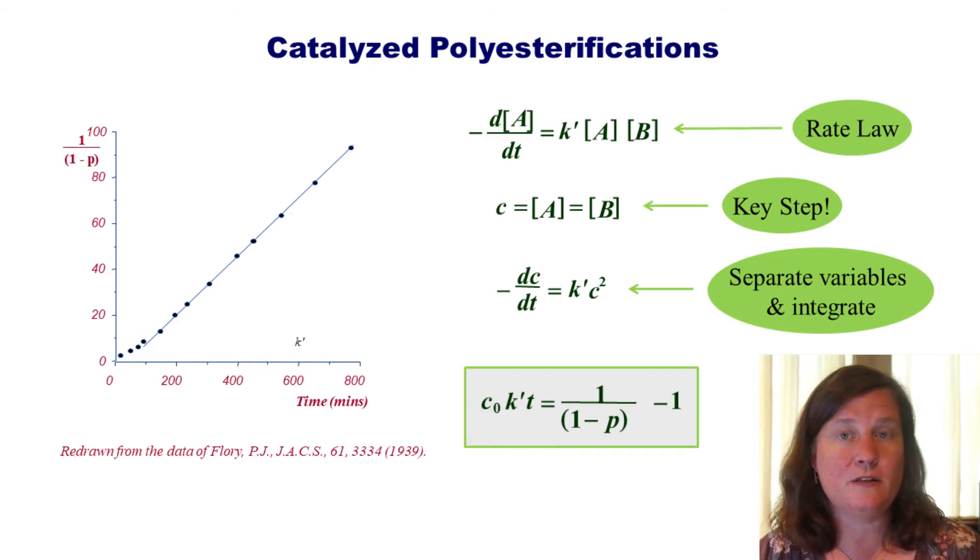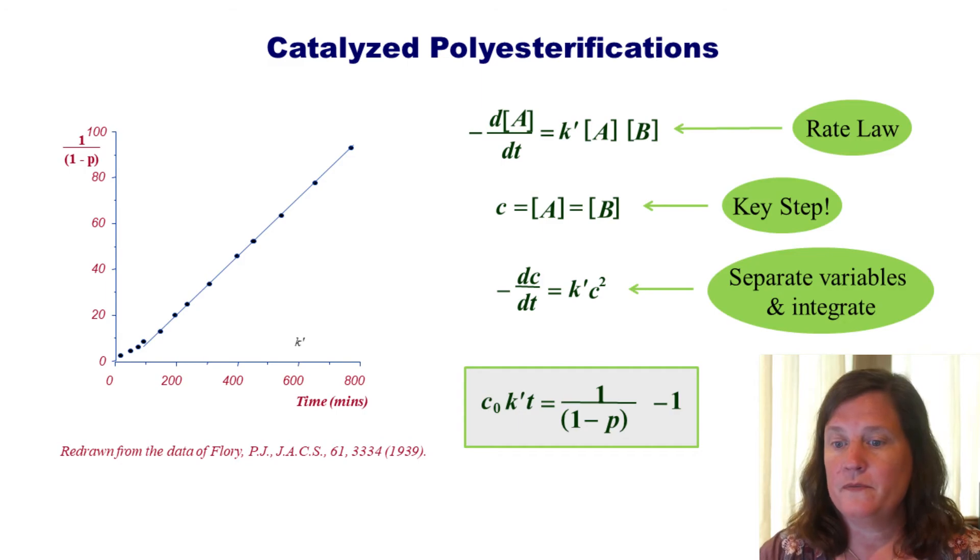So now it's one over one minus P, not one over one minus P squared, that squared dependence has gone away, and we get a wonderfully linear plot, again, except for very short times, where we have a lot of monomer and dimer. Again, we will look at this on the document camera and talk about the steps in more detail. So, there's our catalyzed polyesterifications.